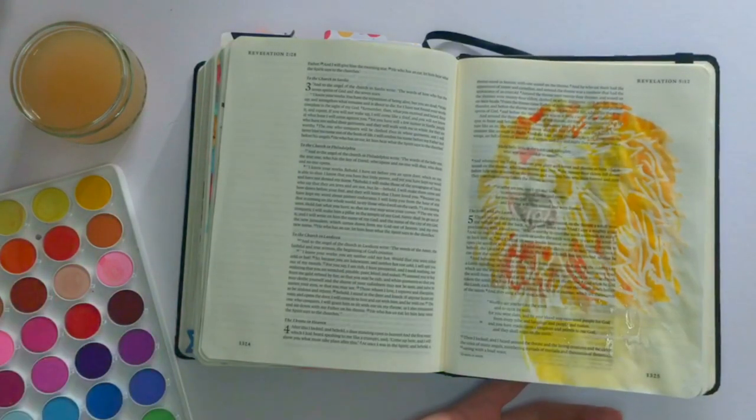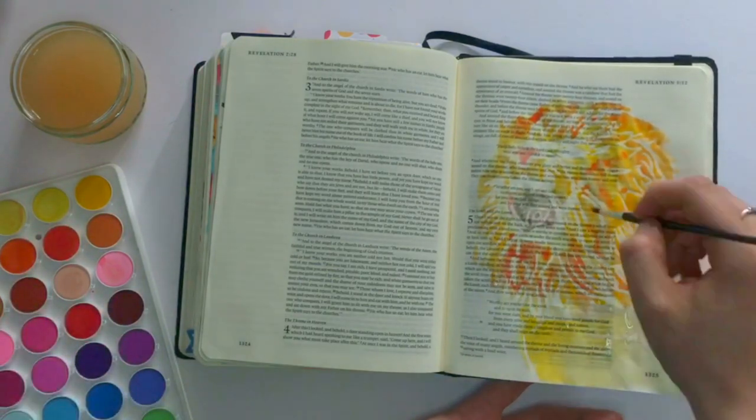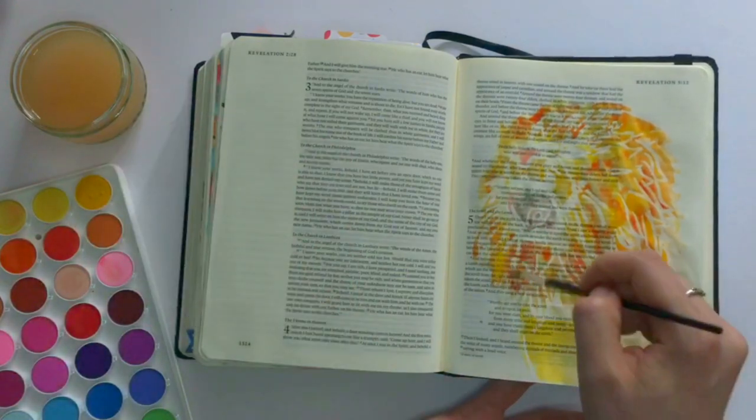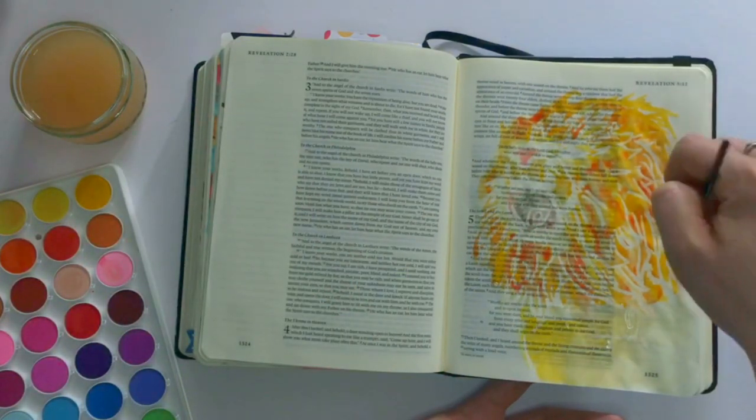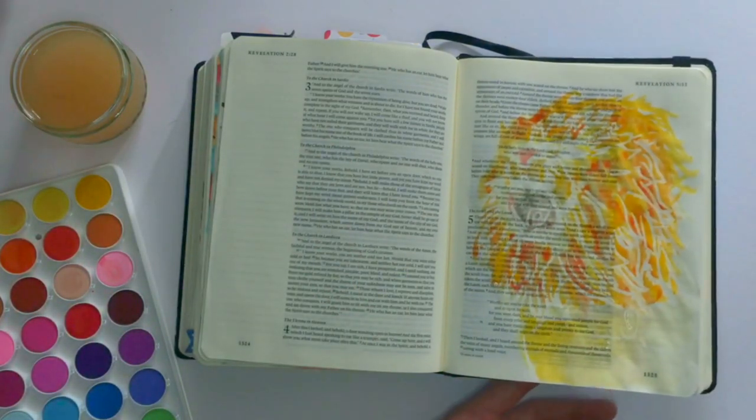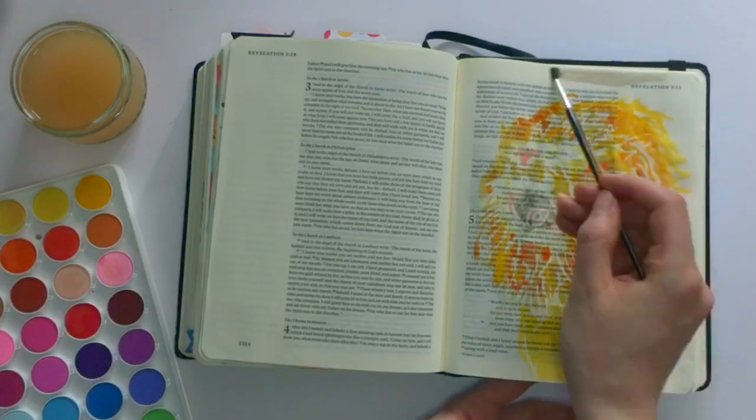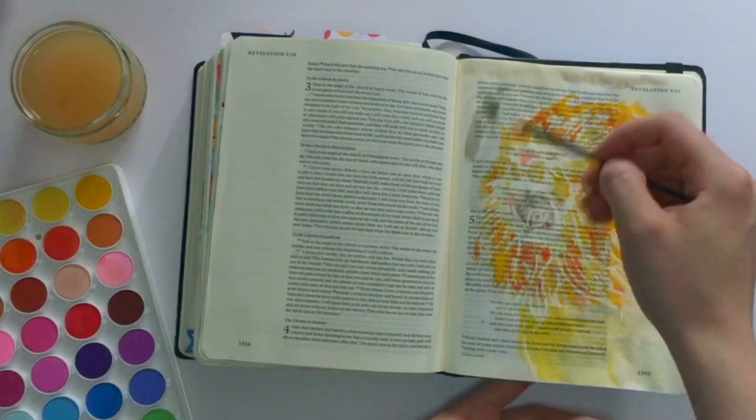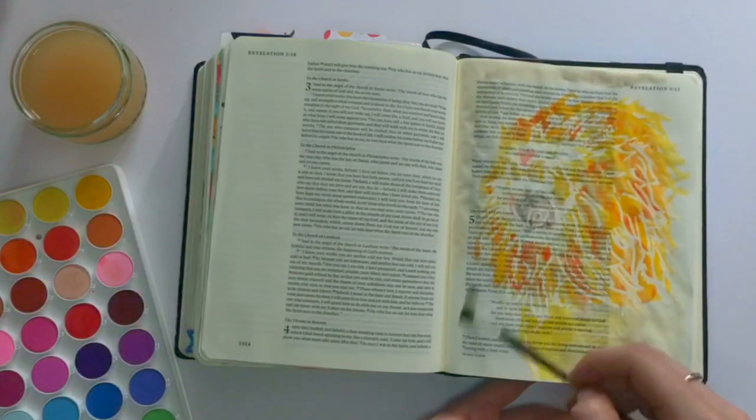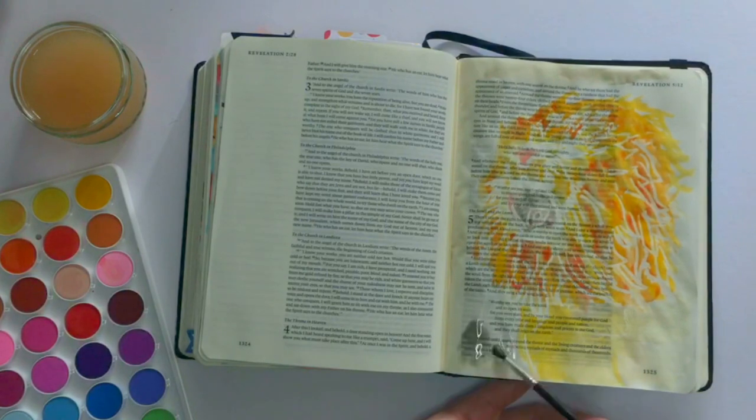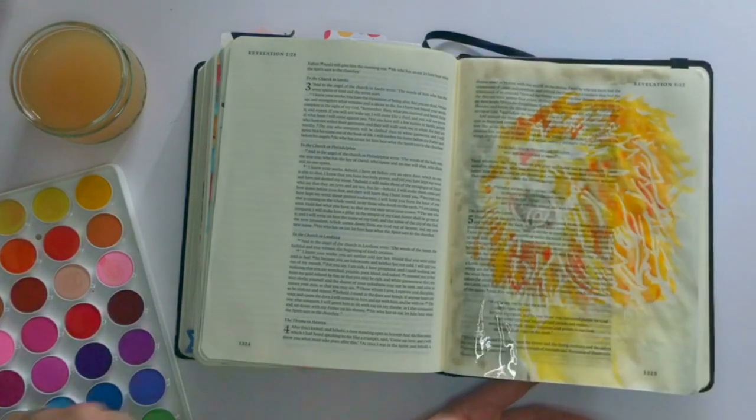So you can do this however much or little as you want to and just keep going back and adding color until you're really happy with it. I'm going to also add a little bit of color around the outside because I felt a little bit like he was blending into the background of the page. So I've chosen quite a light pale gray and I'm just going to go around the outside and darken it up so that that yellow really pops off the page.